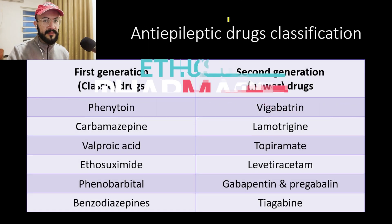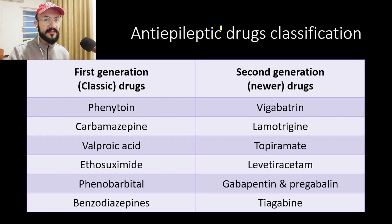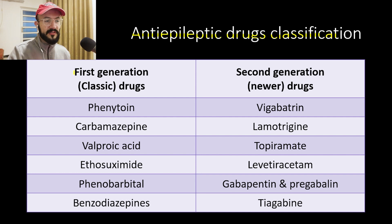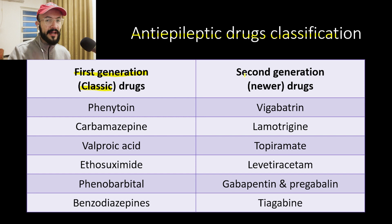Previously in the CNS Pharmacology Masterclass, we talked about the anti-epileptic drugs classification and we mentioned that we have first-generation anti-epileptics, which are also called the classic anti-epileptics or the older anti-epileptics. And we have the second-generation anti-epileptics, which are also called the newer anti-epileptics.